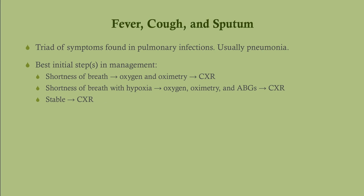Fever, cough, and sputum are the classic triad of symptoms in pulmonary infections. The best initial step in management depends on their presentation. If they're short of breath along with the triad, give them oxygen, put them on oximetry, and then get the chest x-ray. Remember, we're always tending to the ABCs first — if they're hypoxic, we deal with that first, then we can address the pneumonia.